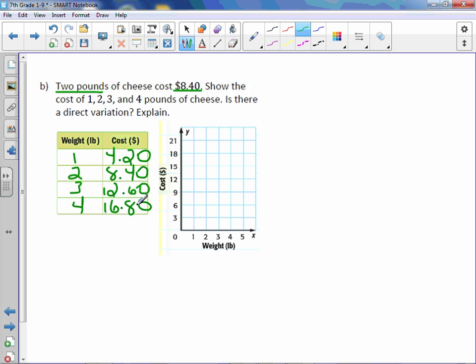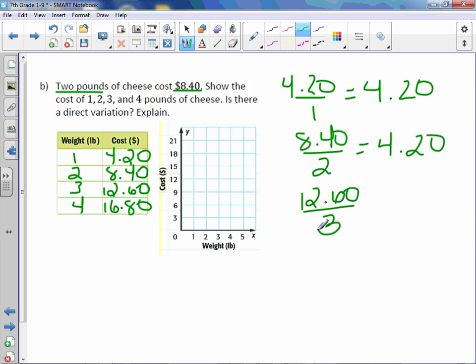If we figure out our ratios first, $4.20 over 1 is $4.20. $8.40 over 2 is also $4.20. $12.60 over 3, when you divide it, is also $4.20. And $16.80 divided by 4 is also $4.20.